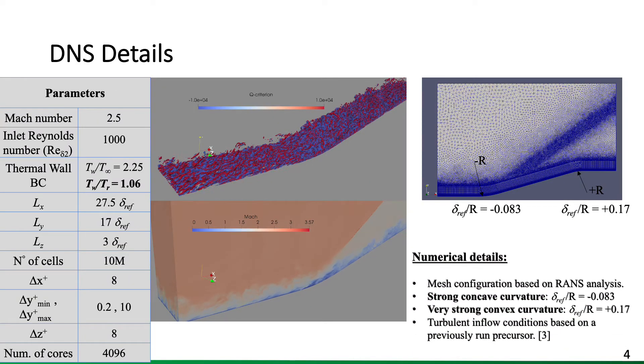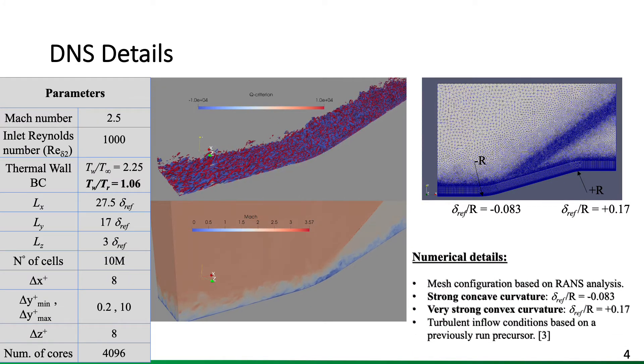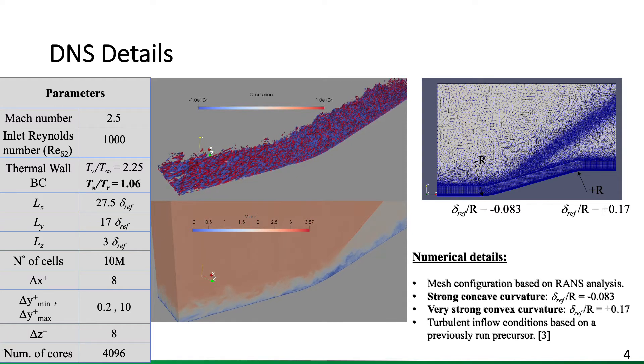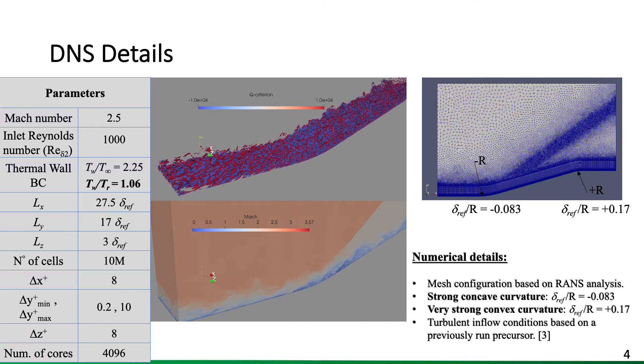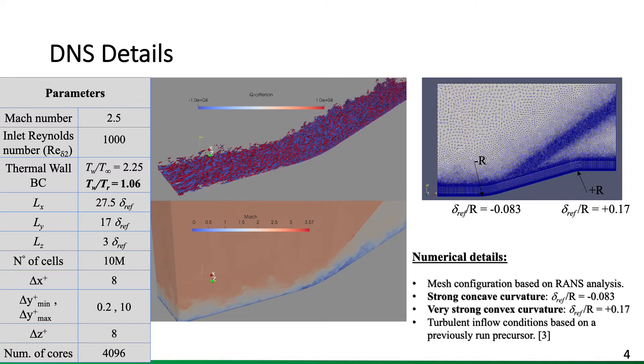Now let's discuss some high-level details of the present simulation, which include a Mach number of 2.5, an inlet Reynolds number of 1,000, and quasi-adiabatic wall conditions.